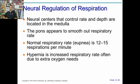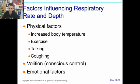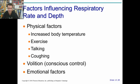How do you control breathing? There are neural centers in both the medulla and the pons. The medulla controls the rate and depth — how fast and how deep. The pons smooths out the respiratory rate to maintain consistency, which is about 12 to 15 respirations per minute. You might breathe more often to deal with excess oxygen needs — this is called hyperpnea or hyperventilating. Other factors affecting respiratory rate and depth include increased body temperature, exercise, talking, and coughing.